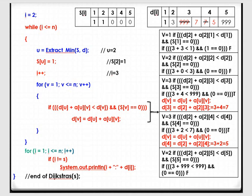When V equal to 1: D[2] plus A[2][1] — is it less than D[1]? D[2] is 3 and A[2][1] is 3, so 3+3=6. Is 6 less than D[1] which is 1? No. And also vertex 1 is already visited, so the condition is false. V incremented to 2: D[2] plus A[2][2] — the diagonal value in the cost adjacency matrix is 0, so 3+0=3. Is 3 less than D[2] which is 3? No. And vertex 2 is also visited — condition is false.